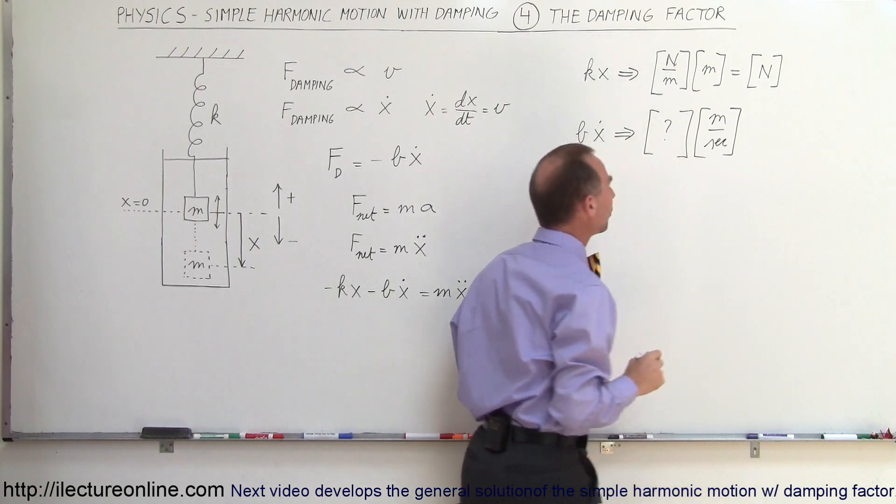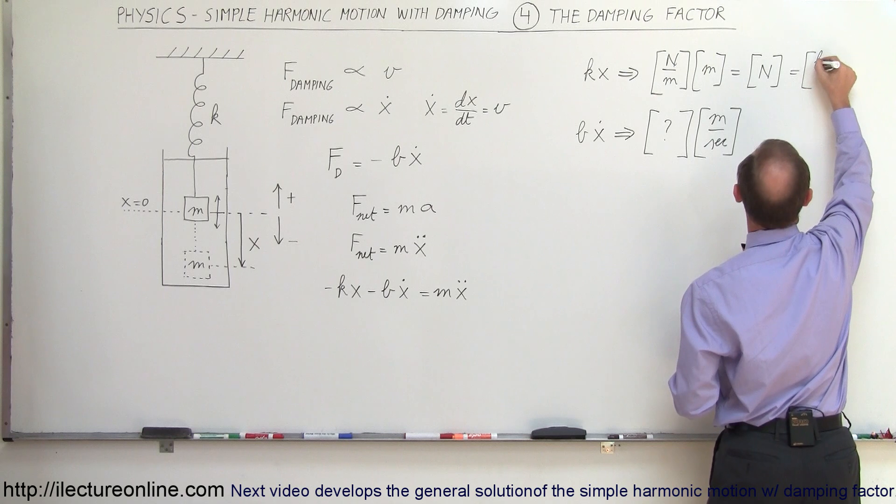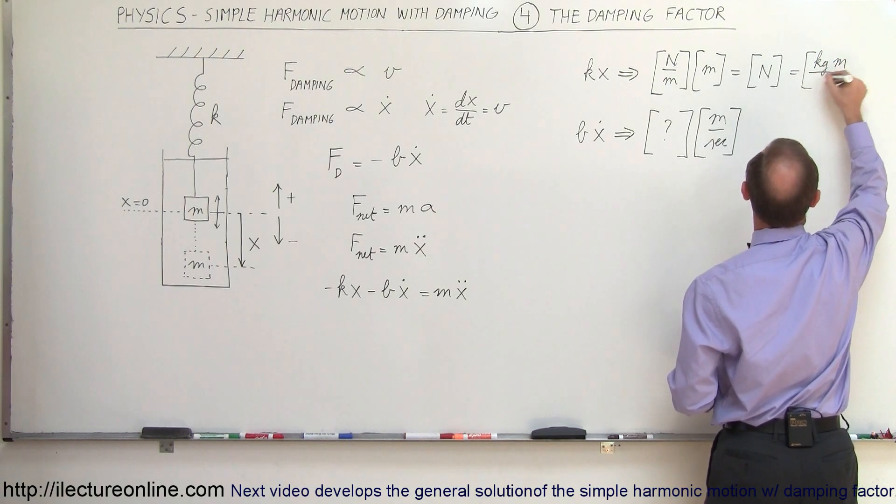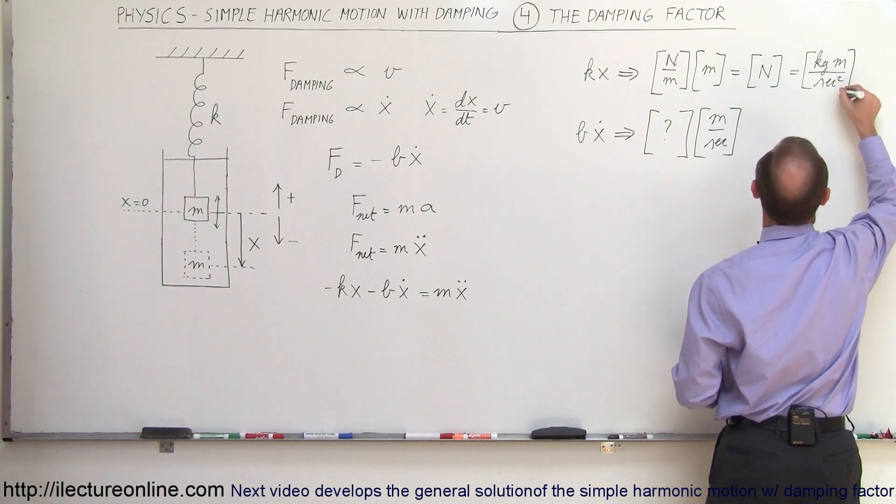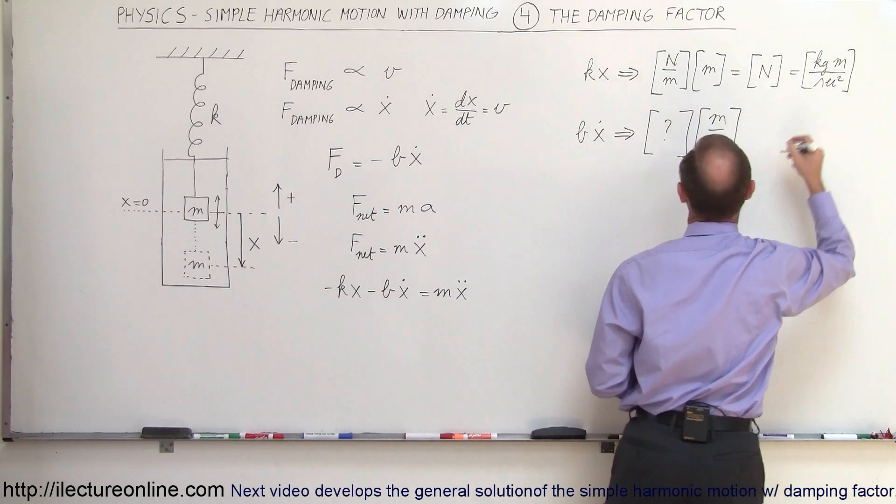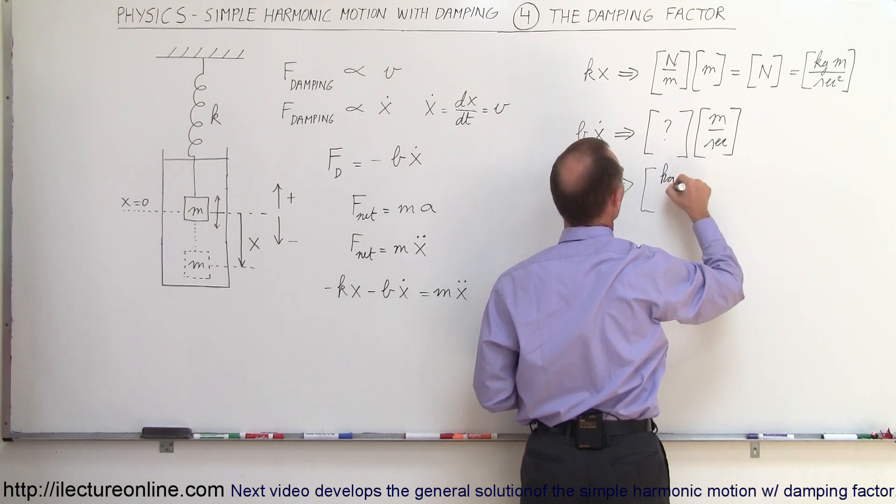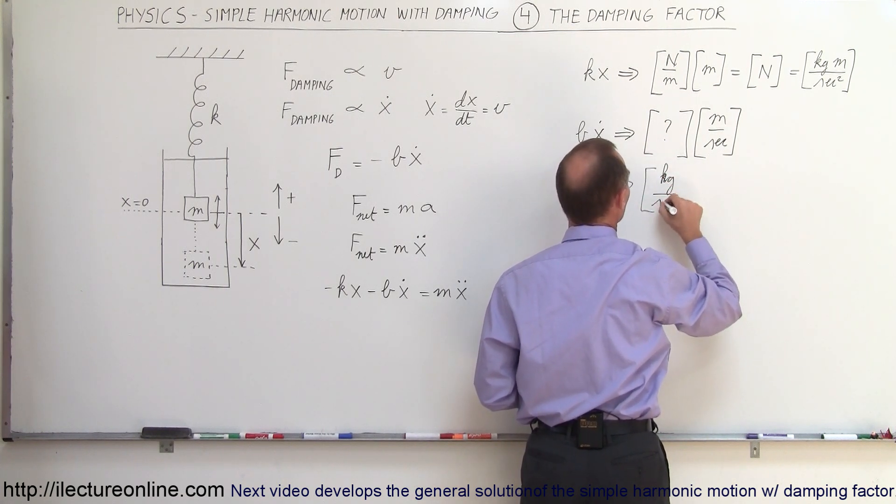Now we can notice that the units for Newtons would be kilograms meters per second squared. And notice we already have meters per second, so we still need kilograms per second, which means that the units for b times x dot would be kilograms per second times meters per second.